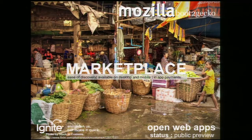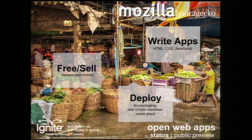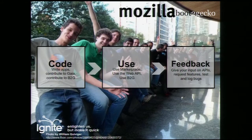All of this is brought together by the marketplace, which makes your applications easy to discover and available on both desktop and mobile. We are working on in-app payments for web apps. All you need to know to write these apps for all these platforms is HTML, CSS, and JavaScript. To deploy, all you need is a simple JSON file manifest, and using the marketplace you can sell and distribute your app.